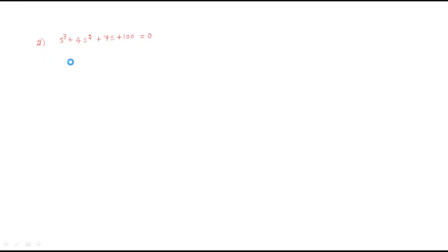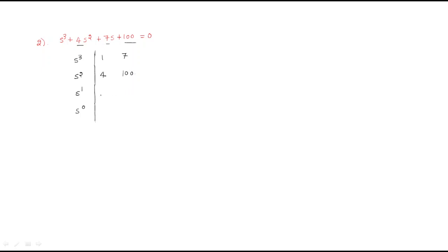Hello everyone. In this session we will discuss some more problems regarding the Routh-Hurwitz criteria. The problem is s³ + 4s² + 7s + 100. Using the same procedure, write the RH table with rows s³, s², s¹, and s⁰. The coefficients for s³ are 1 and 7; for s² are 4 and 100.